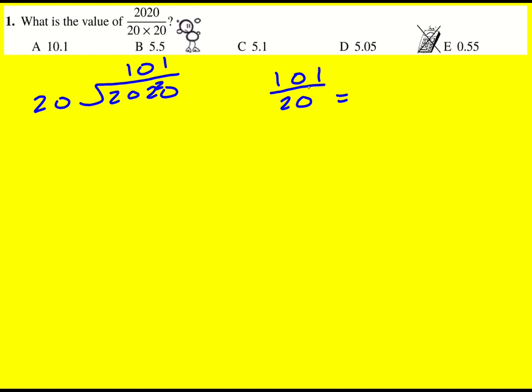Now we could say that 20 goes into 101 five times with remainder 1. So it's going to be 5 and 1 over 20, and then convert that. It's going to be 5 and 5 over 100, or 5.05. That's the answer.